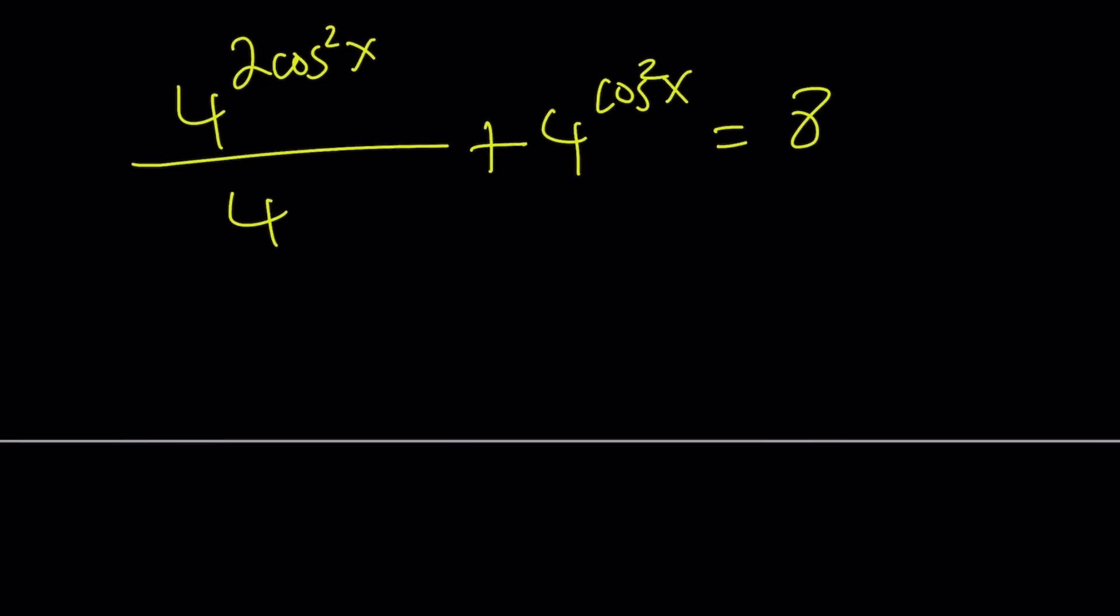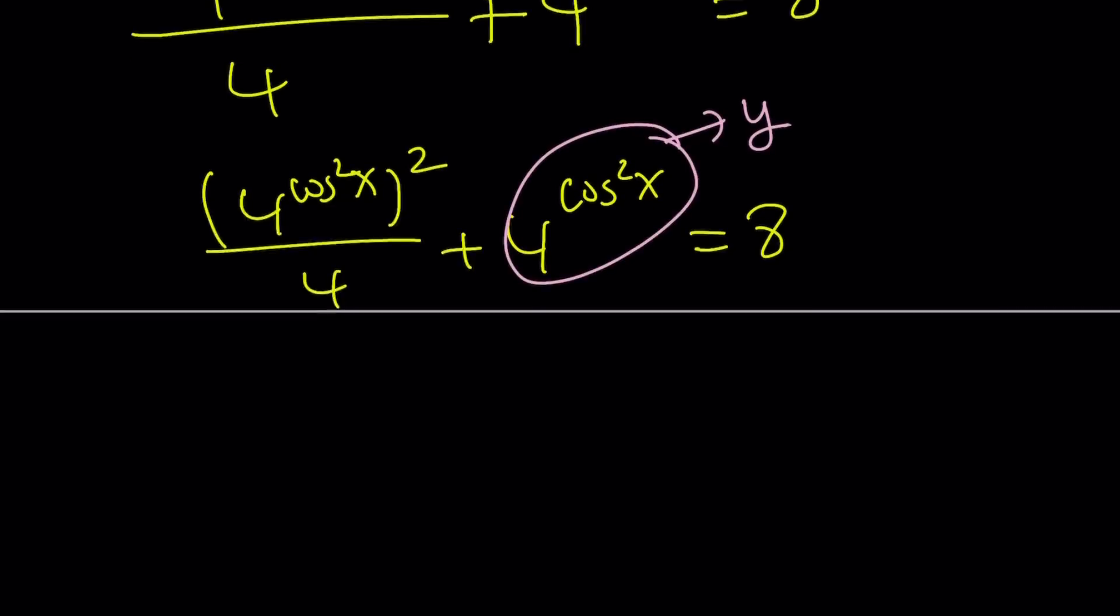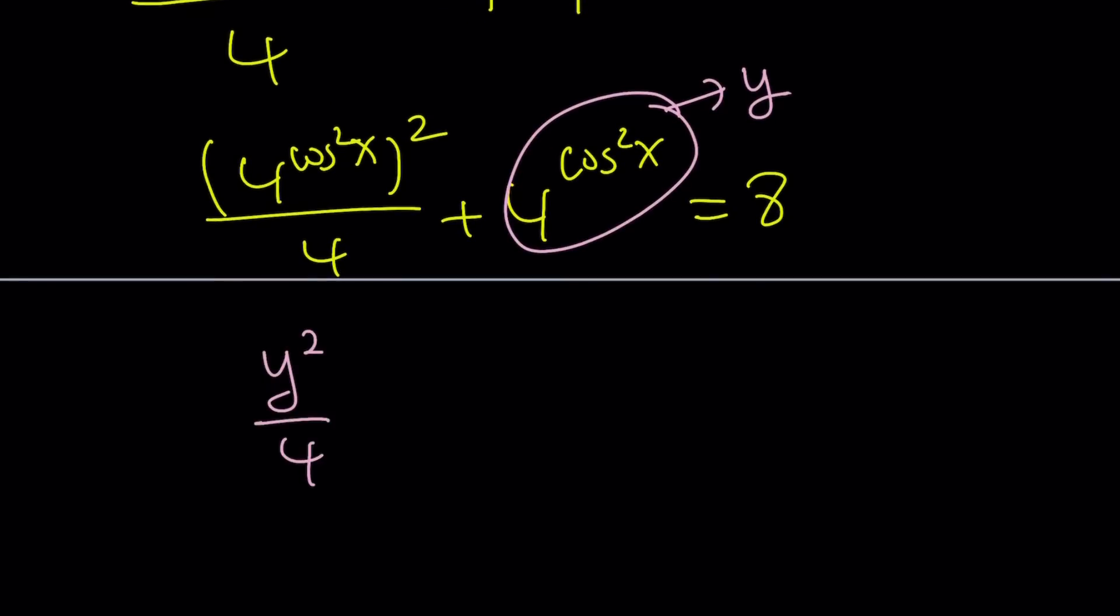If the exponents are being subtracted, that means a quotient. Make sense? Hopefully it does. Now we have this equation. And obviously, 4 to the power 2 cosine squared x can be written as 4 to the power cosine squared x squared. And guess what? This calls for substitution, doesn't it? So we're going to go ahead and call this something. How about y? That gives us the following. y squared over 4 plus y equals 8.